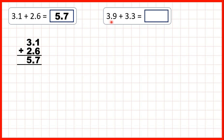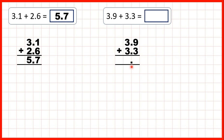Now we have 3.9 plus 3.3, so again we set this out as a column addition making sure that our decimal points are lined up so that our ones and our tenths columns are lined up as well. We copy the decimal point down into our answer and now we use column addition. 9 plus 3 is 12, so that's 1 and 2, and now 1 plus 3 plus 3 is 7, so our answer is 7.2.